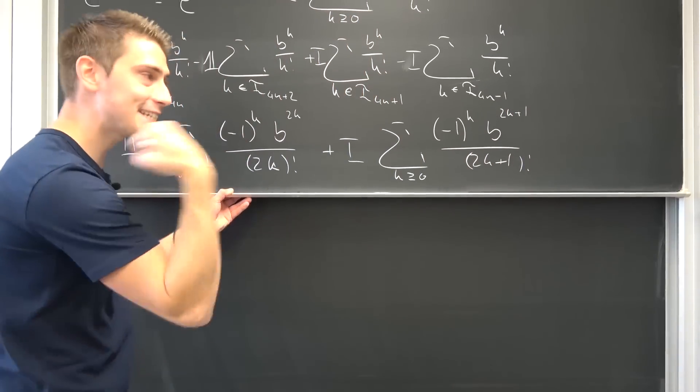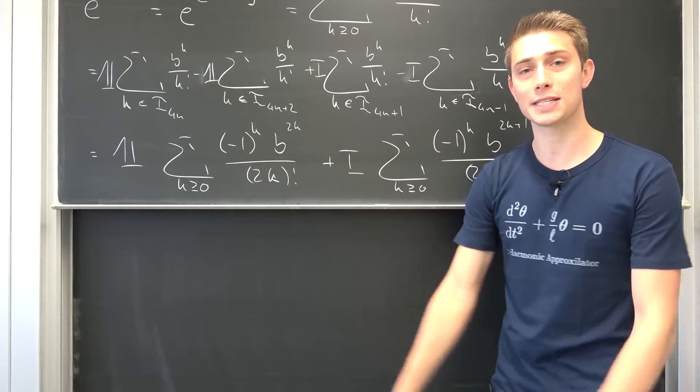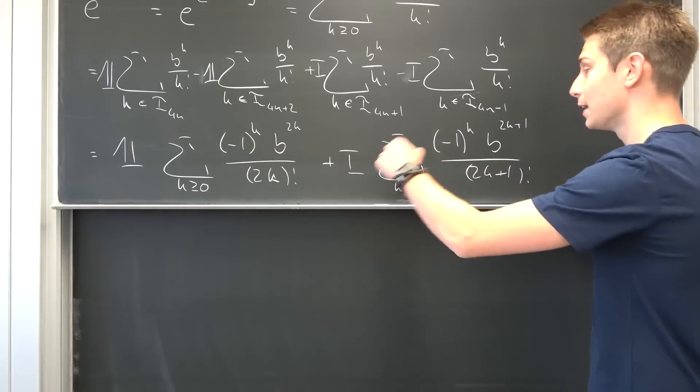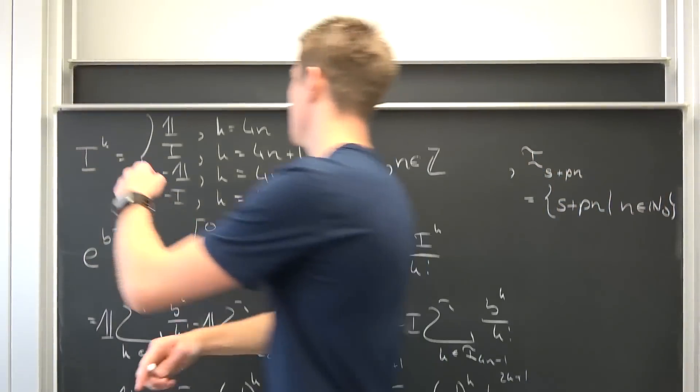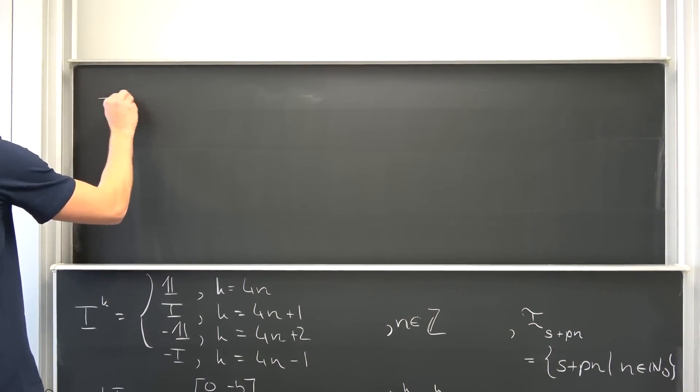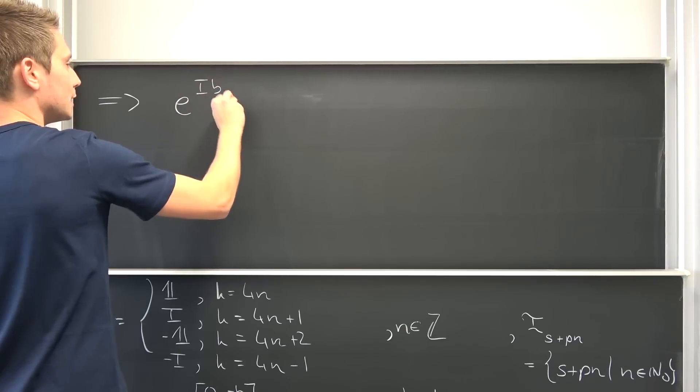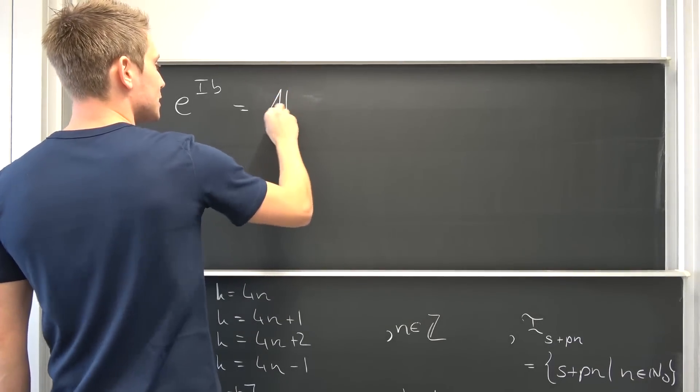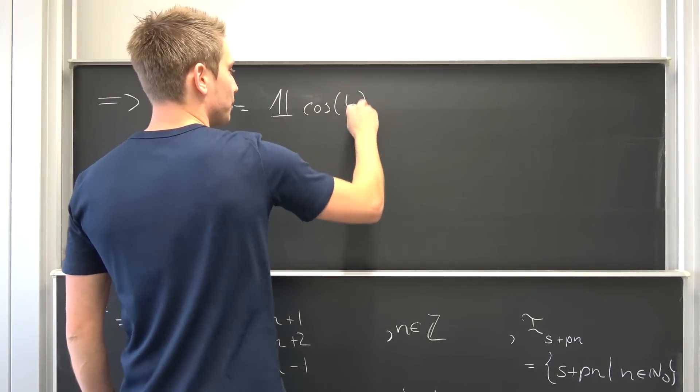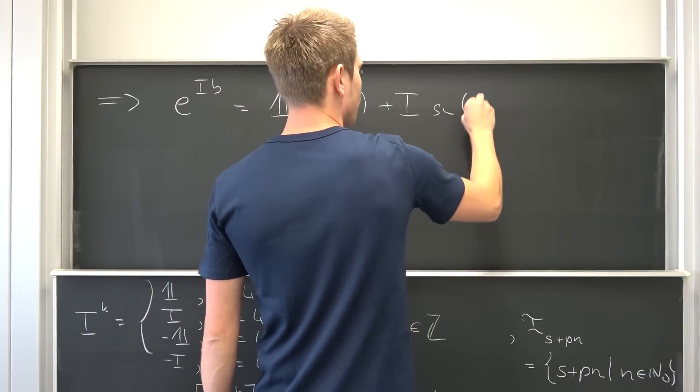And here goes, this is the best part. This thing right here, take a look into the description, is the series expansion for the cosine of B. This thing is the series expansion for the sine of B. Meaning overall, we are going to end up with E to the I times B being equal to the identity matrix times the cosine of B plus our imaginary unit I times the sine of B.